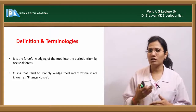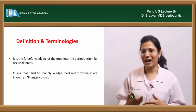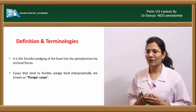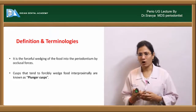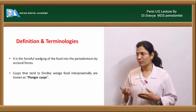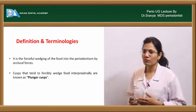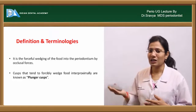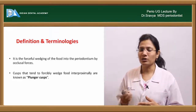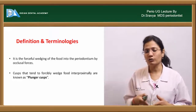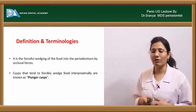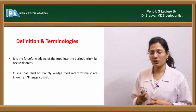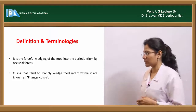Food impaction is defined as forceful wedging of food into the periodontal tissues by occlusal forces, and the cusps that tend to wedge this food forcefully into the interproximal areas are defined as plunger cusps.